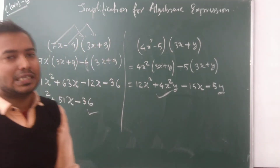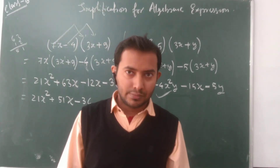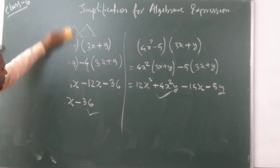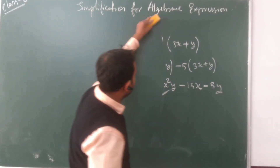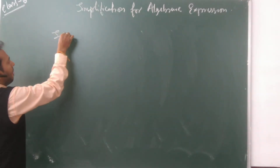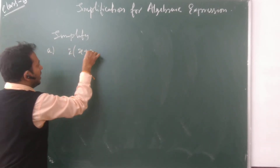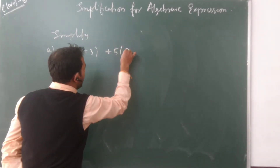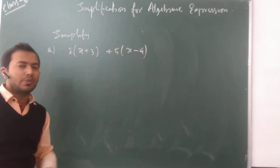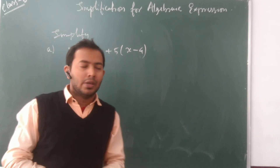Now we enter into simplification of algebraic expressions. The question will say 'simplify' and give something like: 2 times bracket x + 3, plus 5 times bracket x minus 2. You take one bracket, multiply through, then take the next bracket and multiply through, and then that gives you the simplified expression.